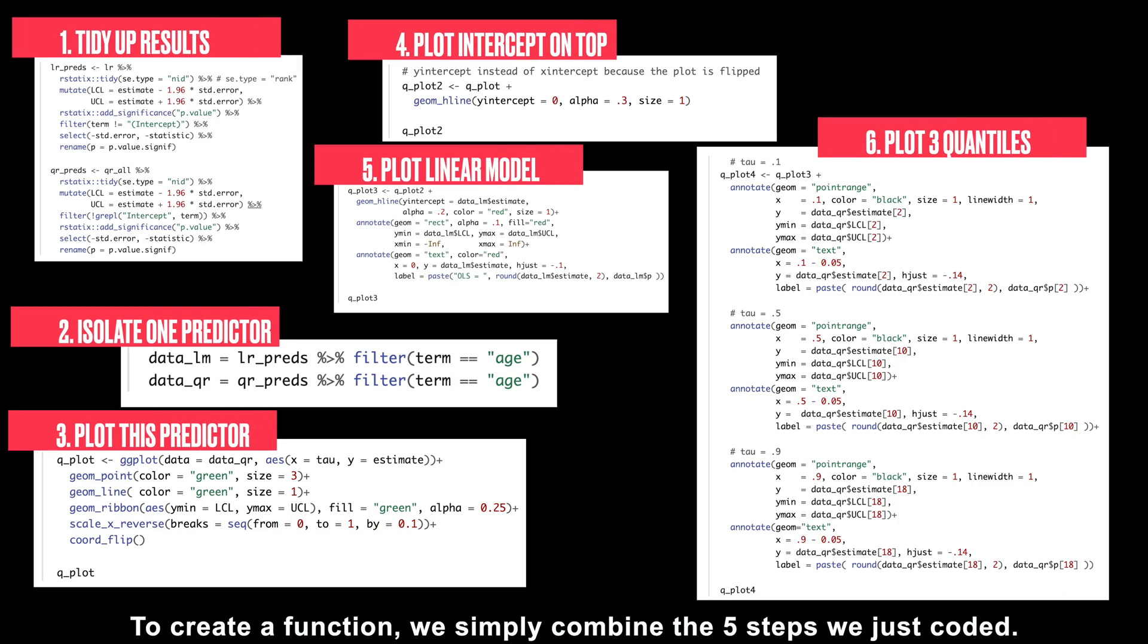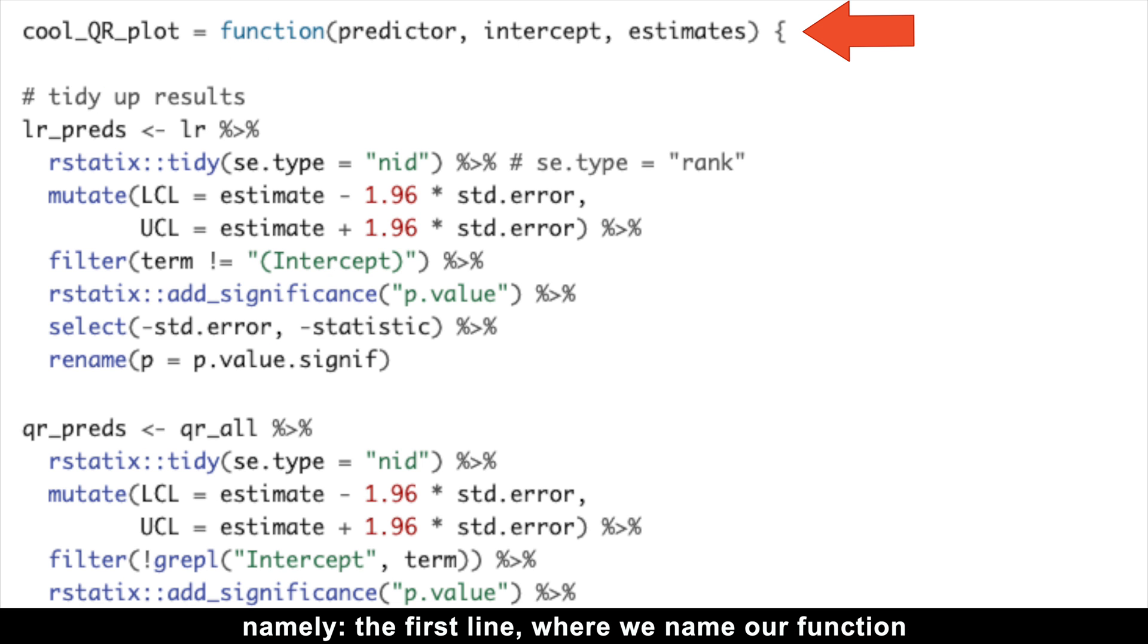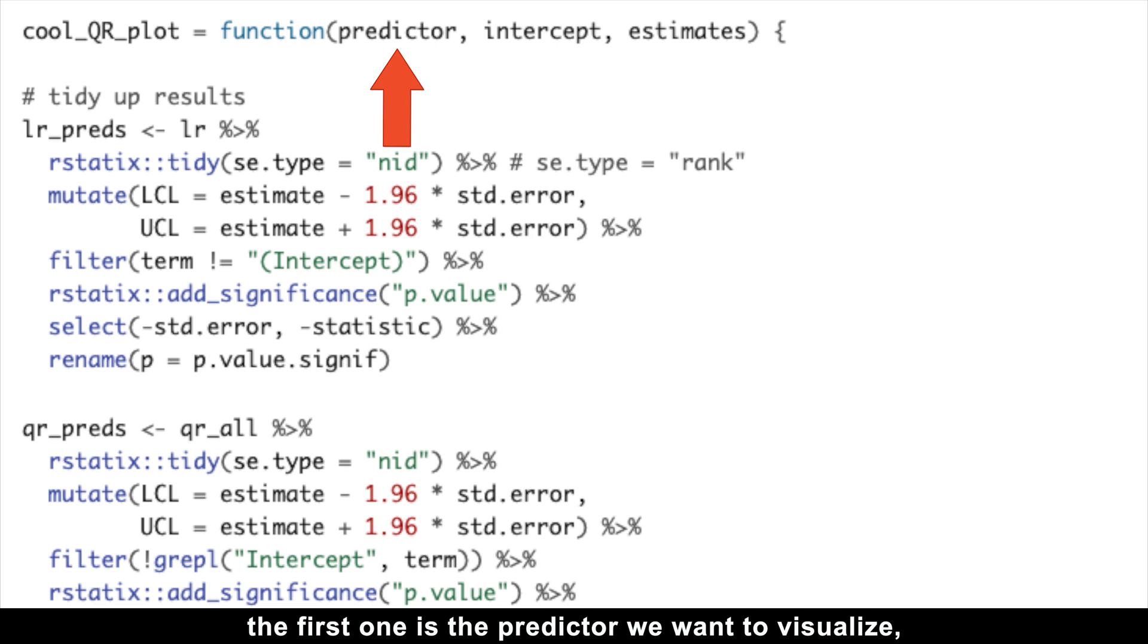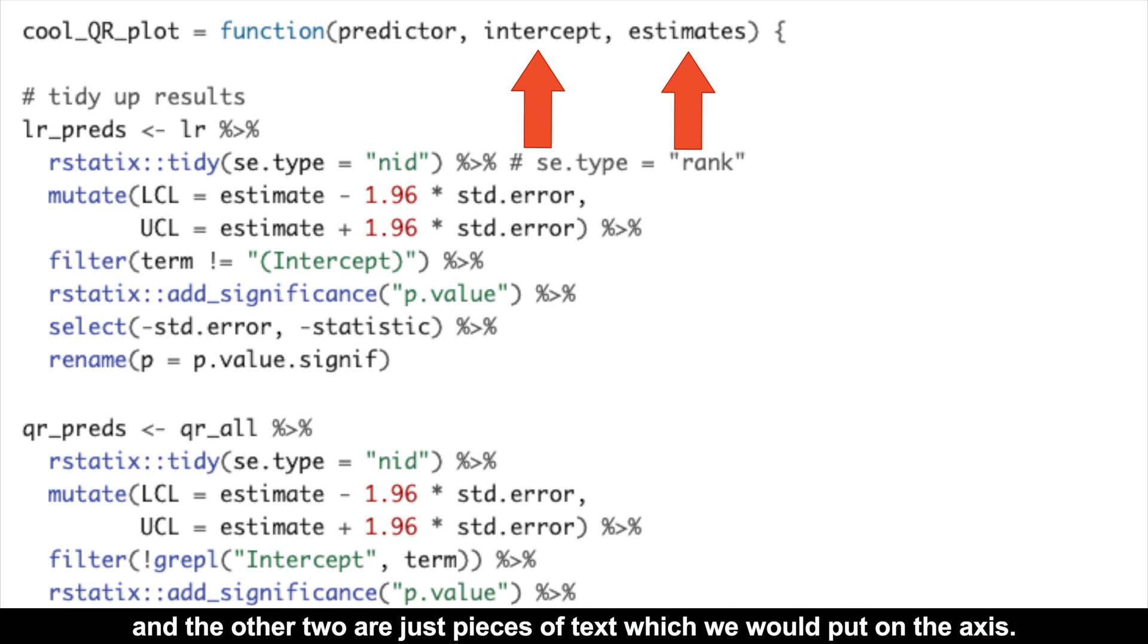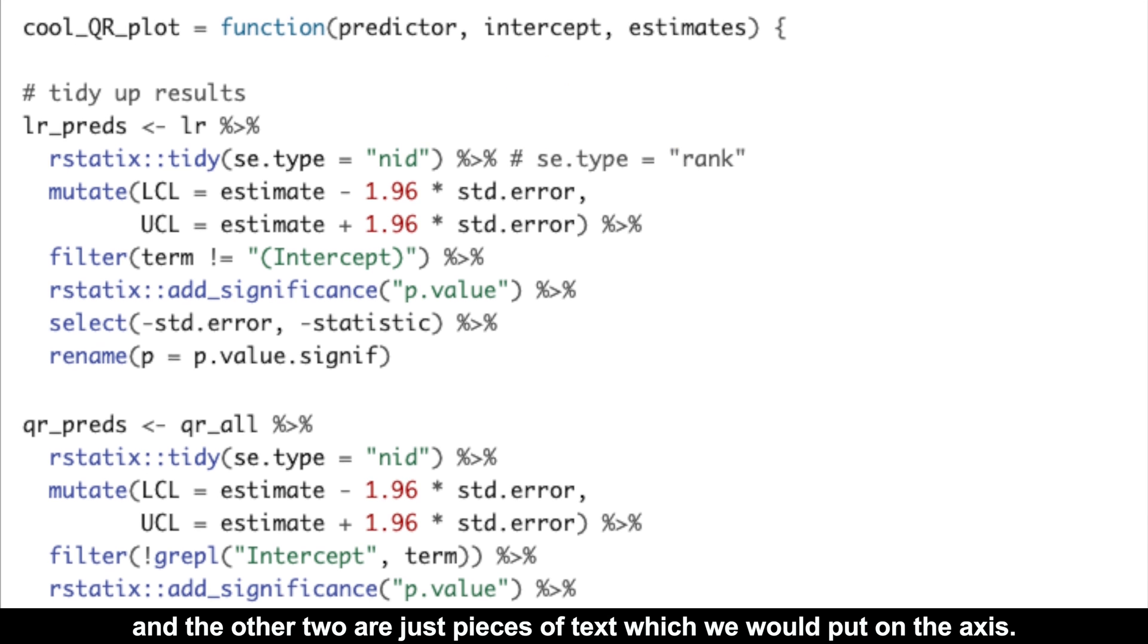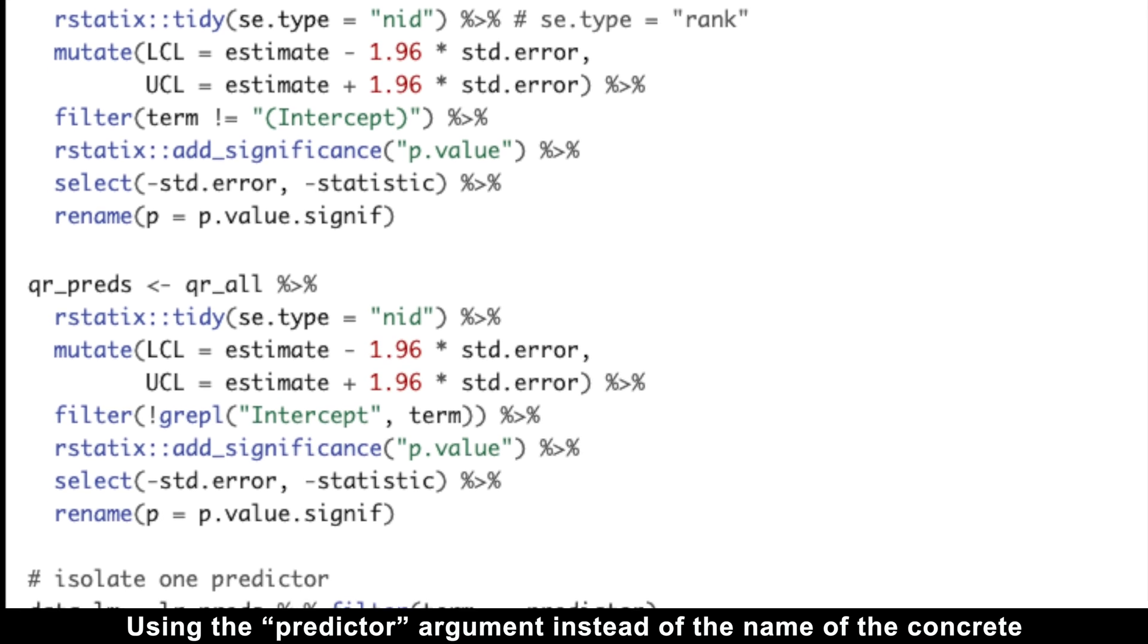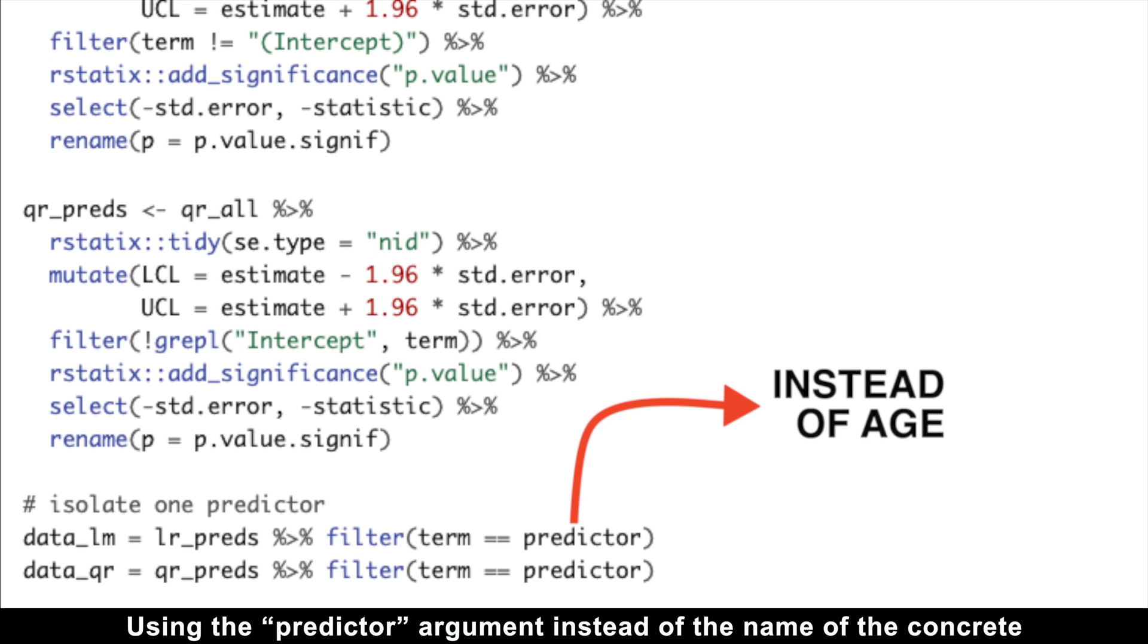To create a function, we simply combine the five steps we just coded. We only need to make a few changes to the already existing code. Namely, the first line, where we name our function and add the arguments we need. We only need three arguments. The first one is the predictor we want to visualize. And the other two are just pieces of text which we would put on the axis. Tidying up datasets goes without any change. Using the predictor argument instead of the name of the concrete predictor, like age, will allow us to choose predictors we want to see in the plot.